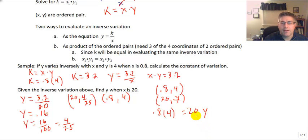Well, I know 0.8 times 4 equals 20 times y. And I'm going to end up with the exact same situation. Divide both sides by 20. And sure enough 0.8 times 4 over 20 equals my y or 3.2 over 20. So either way we're going to get the same particular answer.